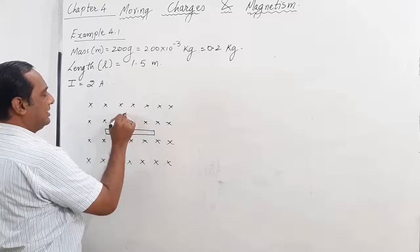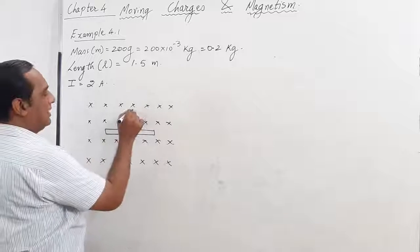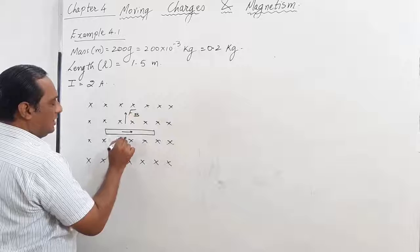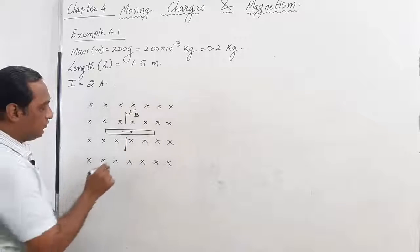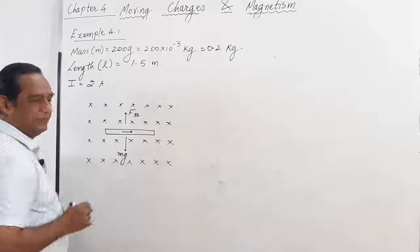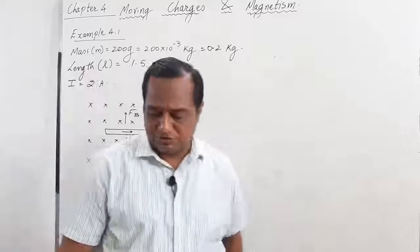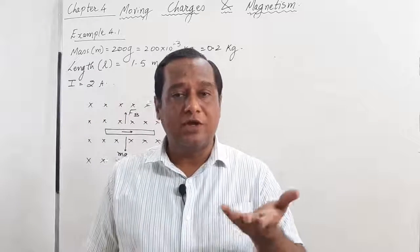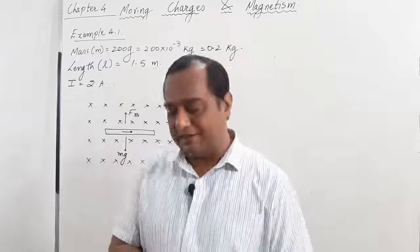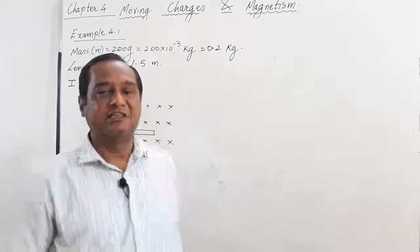The magnetic force will act upward and the gravitational force will act downward. In the question, the rod is suspended in the air, so these forces are balanced.